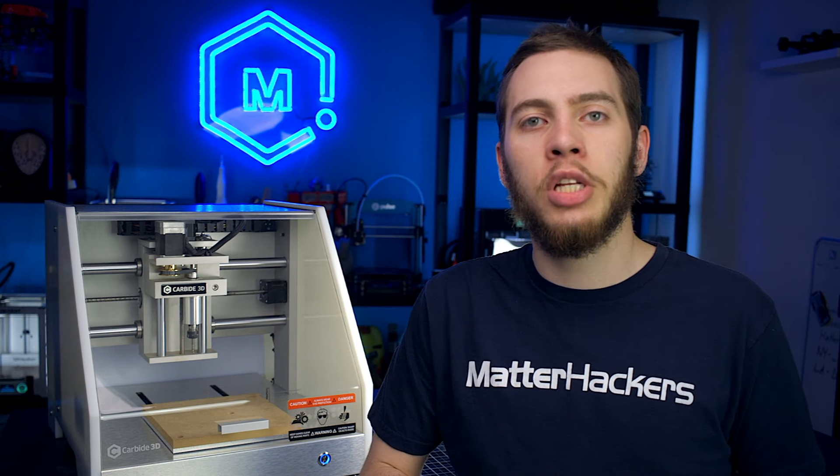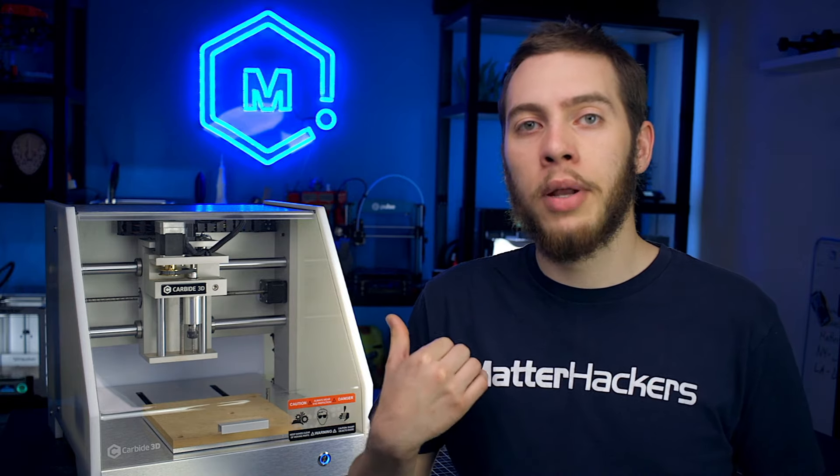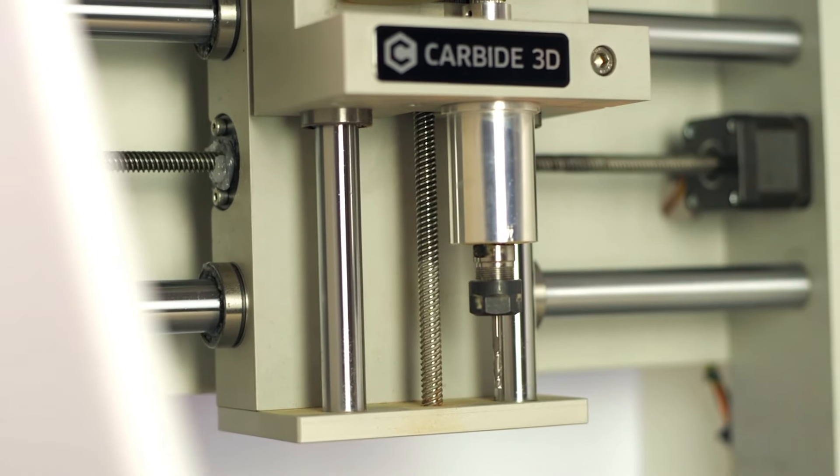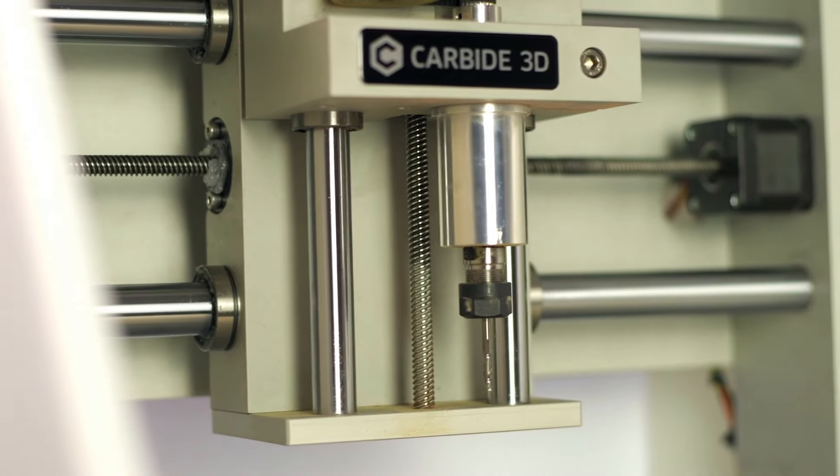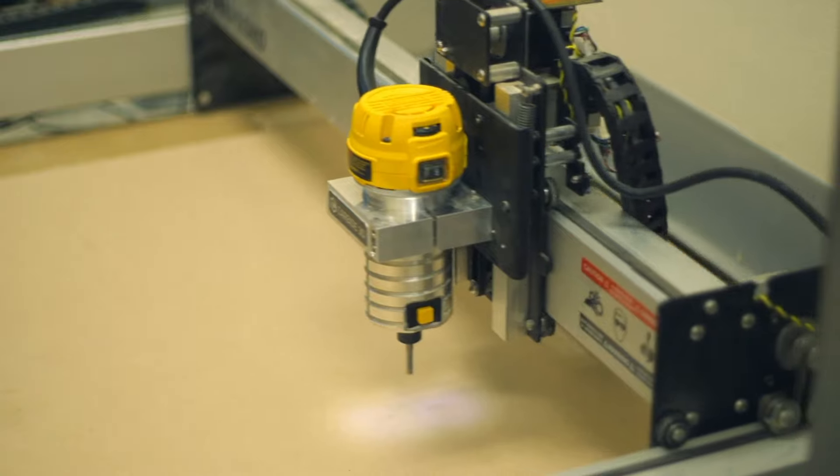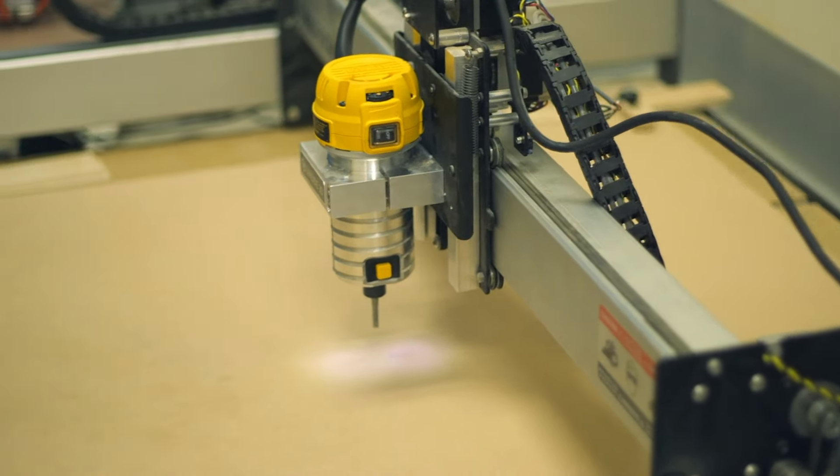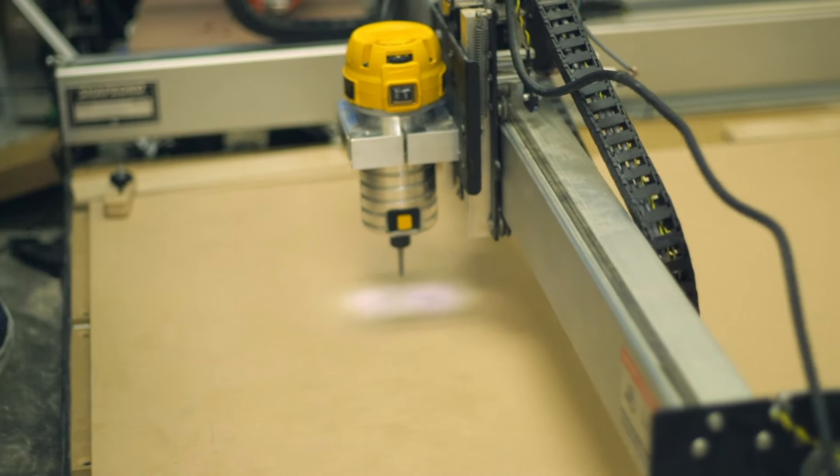Depending on the actual model of the machine, it may use a spindle or a router to carve away material. In the case of the Carbide Nomad, it has a spindle which has software controlled speed adjustments to determine how fast it's spinning. Whereas something like the Inventables X-Carve or the Carbide Shapeoko uses an off-the-shelf hardware tool like a Makita or a Dewalt router to carve away material.